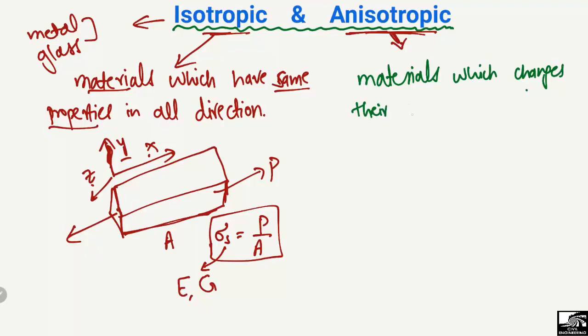Their properties are not the same in all directions; they have different properties in different directions. Materials that change their properties with direction are known as anisotropic materials.